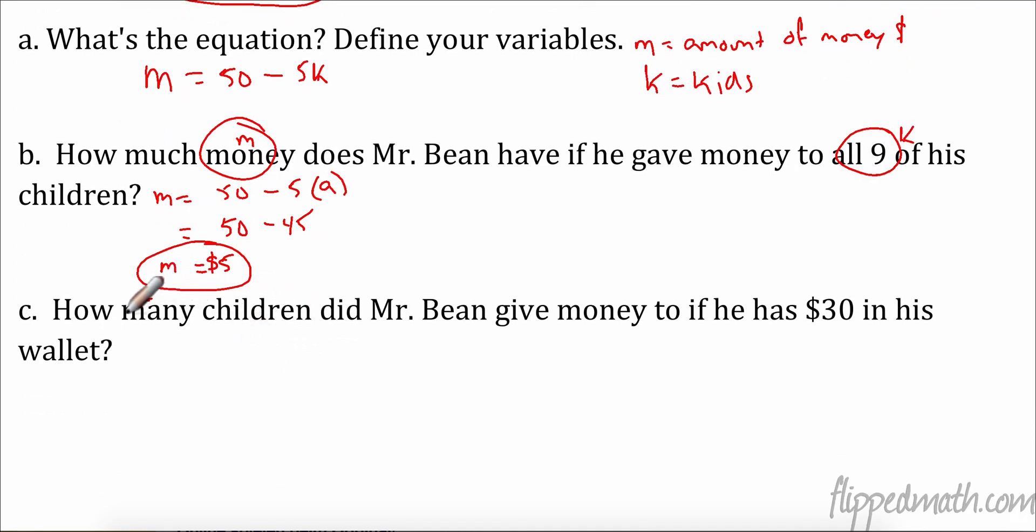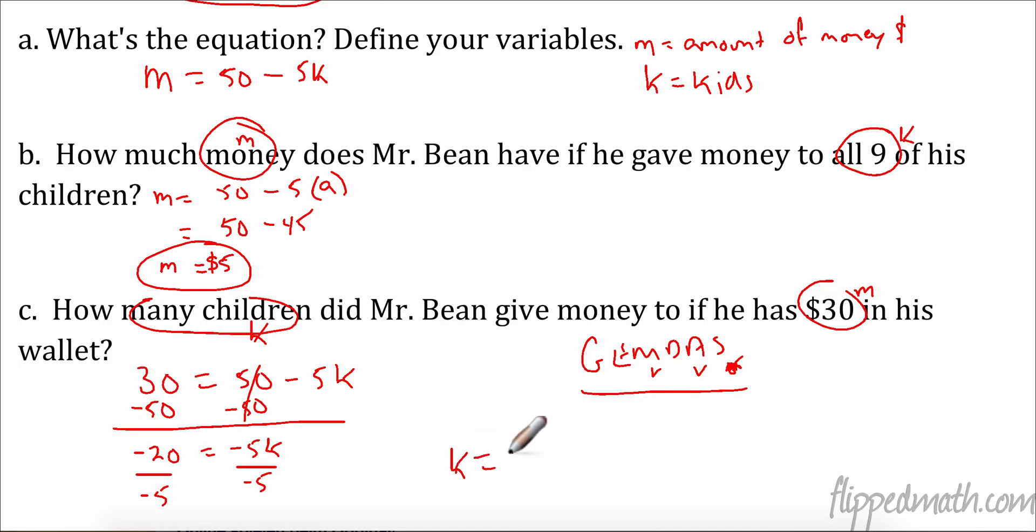Let's look. How many children, well, that's kids, right? So that's our K. Did Mr. Bean give money to if he has $30 left. So $30 is my M equals 50 minus 5K. Now this one's tricky for kids. Let's see what we have. I have subtraction and I have multiplication. When I go backwards, I have to do the subtraction first, but it's not really subtraction. I'm really adding 50 here. I'm adding 50 to this whole thing. So the opposite of adding 50 is subtracting 50. And that's a trick. So now I have 30 minus 50 is negative 20 equals negative 5K. See, I was adding 50 to this negative 5K. The opposite of multiplying by negative 5 is dividing by negative 5. So our K is going to be four kids. So he gave money to four kids if he still has $30 left in his pocket.